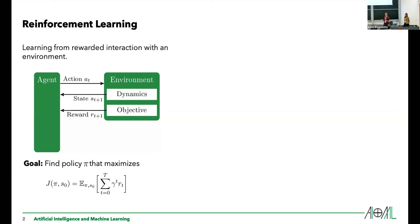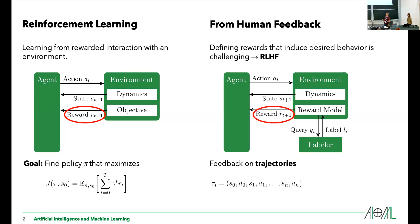We can use this to, for example, reach superhuman performance in Go and in other games, because there the reward function is very easy to specify. But as we already heard in the first keynote, the reward function is usually not very easy to specify in most real-world problems. And one way to tackle this is to forget about this pre-specified reward function and instead try to do reinforcement learning from human feedback.